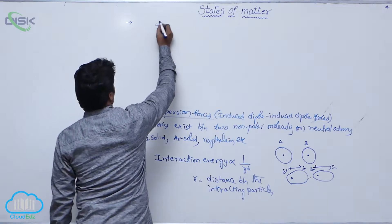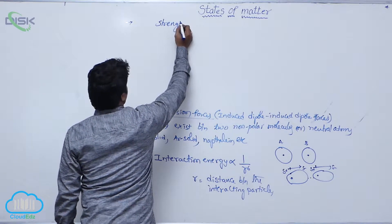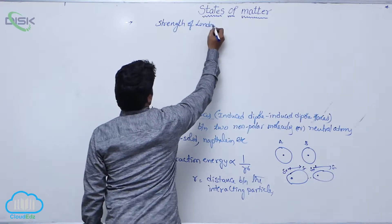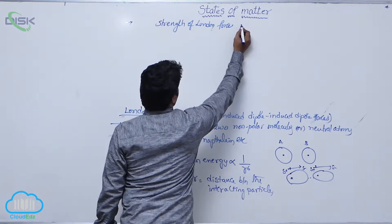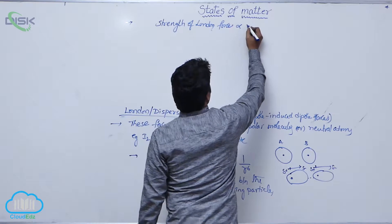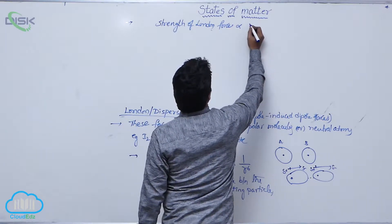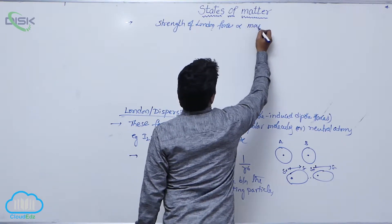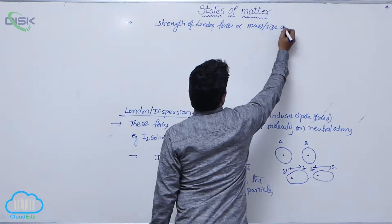The strength of London force depends on — and is directly proportional to — the mass or size of the substance.